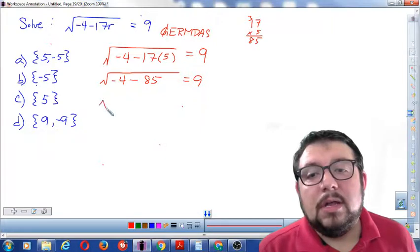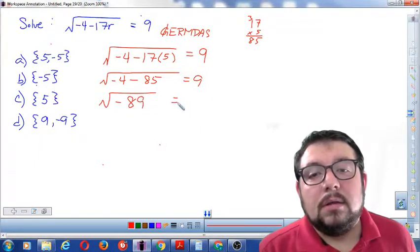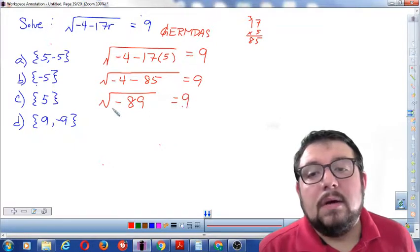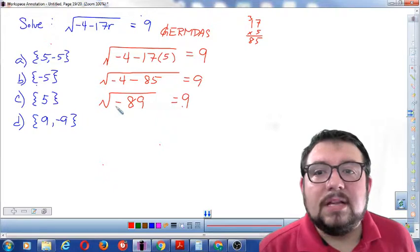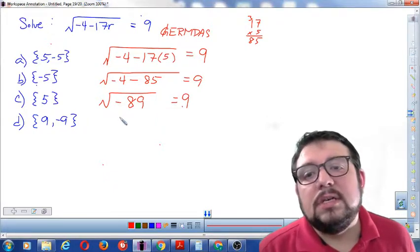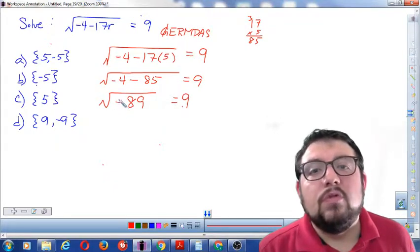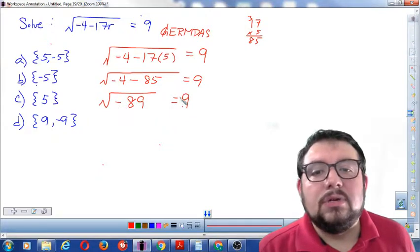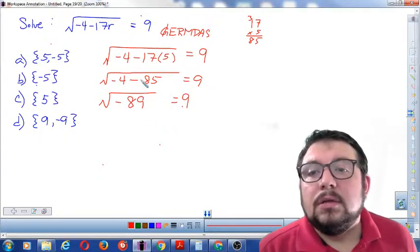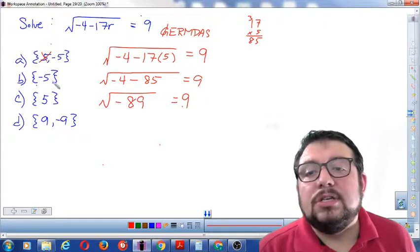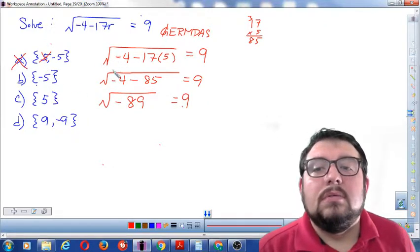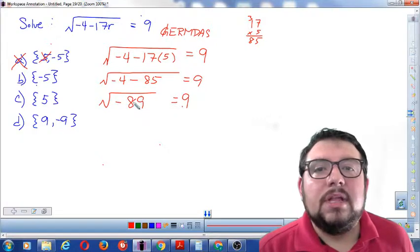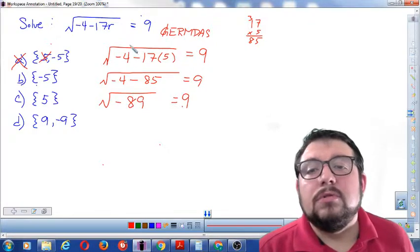And what I'm going to get is square root negative 89 equals 9. Now we know that a negative sign cannot fall under the square root. That will give us an imaginary answer and there's no such imaginaries on the TSI. This basically would be no real solutions and that's certainly not going to be positive 9. So 5 did not match. We cannot have just a single negative number alone under the square root.